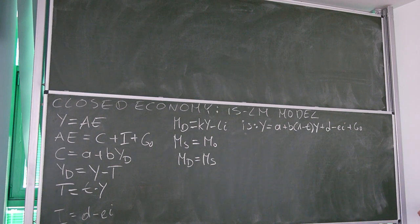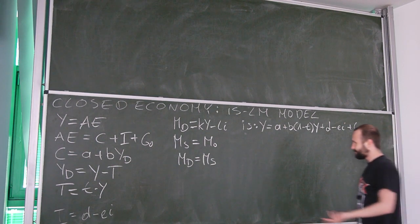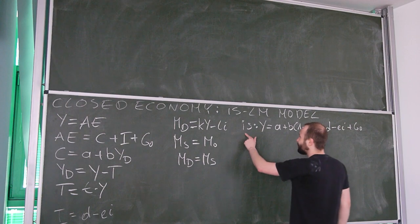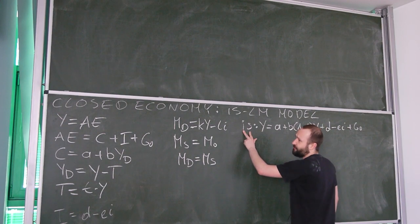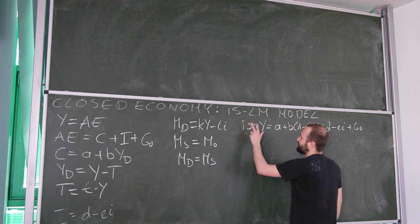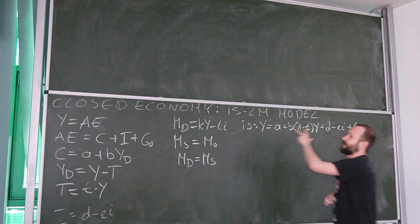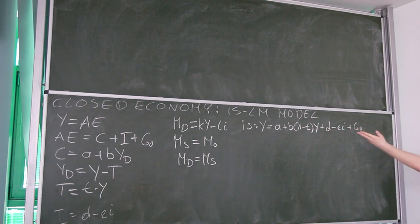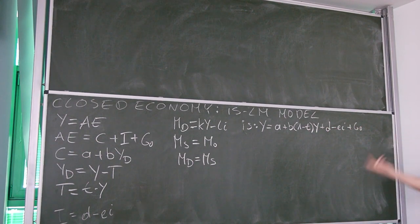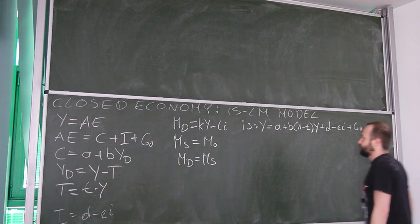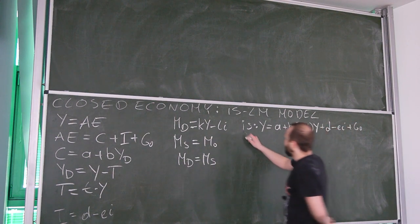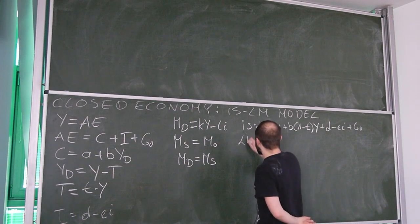Let me refresh your memory: the IS name comes from the fact that investment equals savings, which is an equivalent condition to production equals aggregate expenditures. Now in order to obtain the LM — where liquidity equals money, i.e., money demand equals money supply — we use the equilibrium condition.